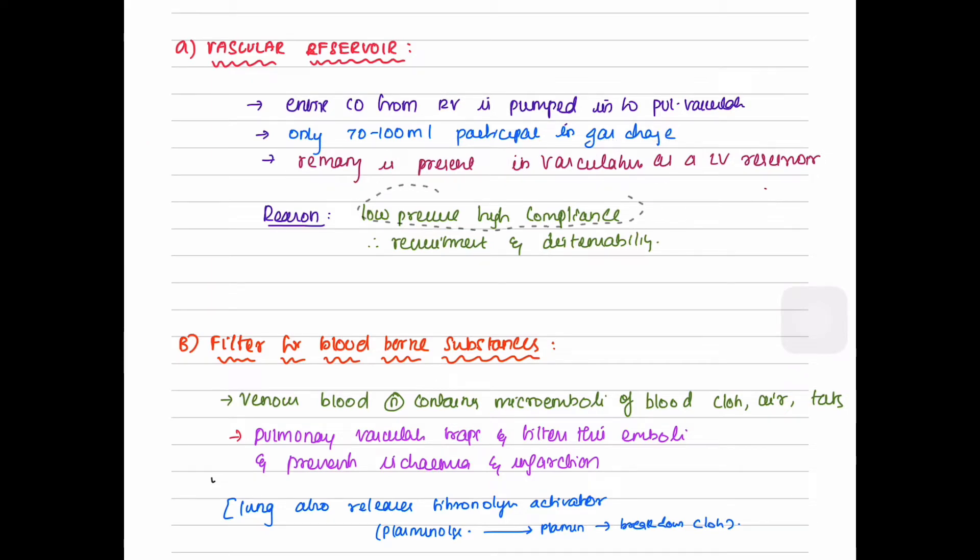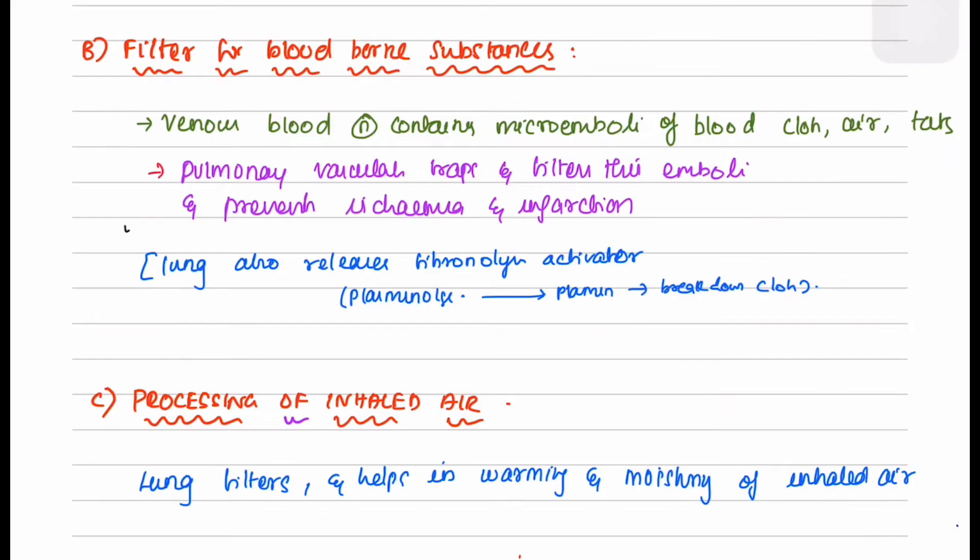Lung as a filter for blood-borne substances: Venous blood normally contains microemboli of blood clots, air, and fat. The pulmonary vasculature traps and filters these emboli and prevents ischemia and infarction. Lung releases fibrinolytic activator which activates plasminogen to plasmin, which helps in breakdown of the clots.